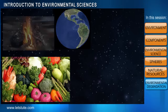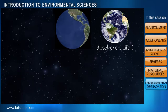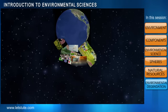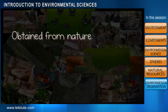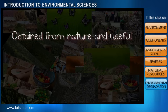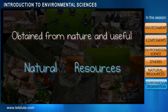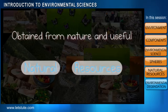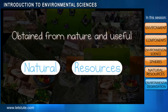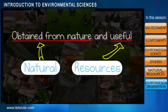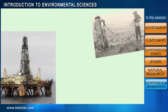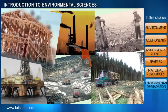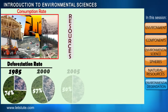The air we breathe, sunlight, weather, and wind are all obtained from the atmosphere. The food we eat and firewood are obtained from the biosphere. All these things are obtained from nature and are very much useful to us, so we call them natural resources. The term is simple: 'natural' means from nature, and 'resource' means something which is of use to us.